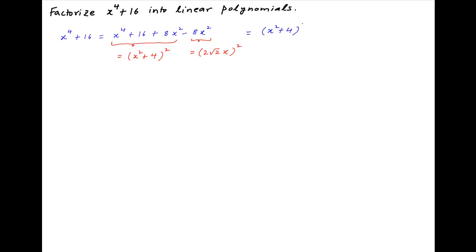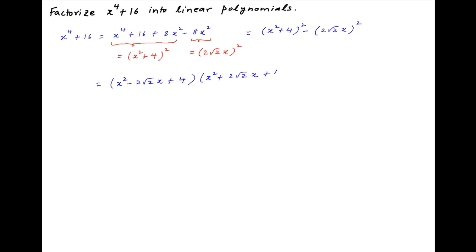Therefore x⁴ + 16 is equal to (x² + 4)² minus (2√2 · x)², which factors as (x² - 2√2·x + 4) multiplied by (x² + 2√2·x + 4).